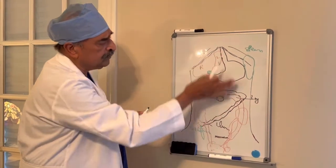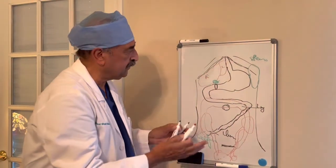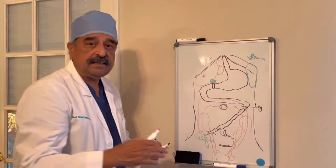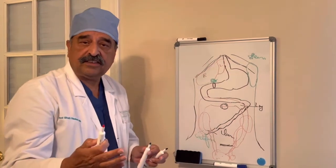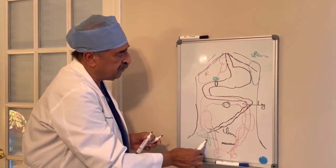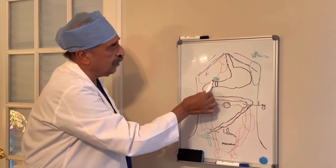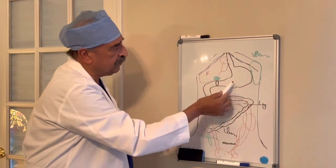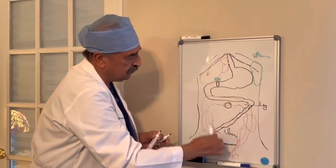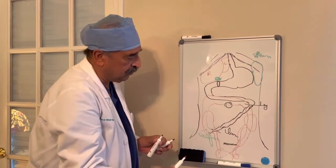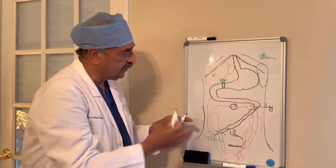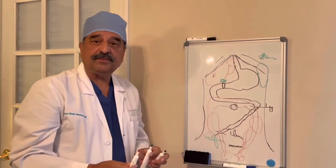So this is the basic anatomy of the abdomen. In the next lecture we will go through the diseases of the appendix, gallbladder, stomach, spleen, small bowel, and the colon. This is the general lecture I wanted to give today.